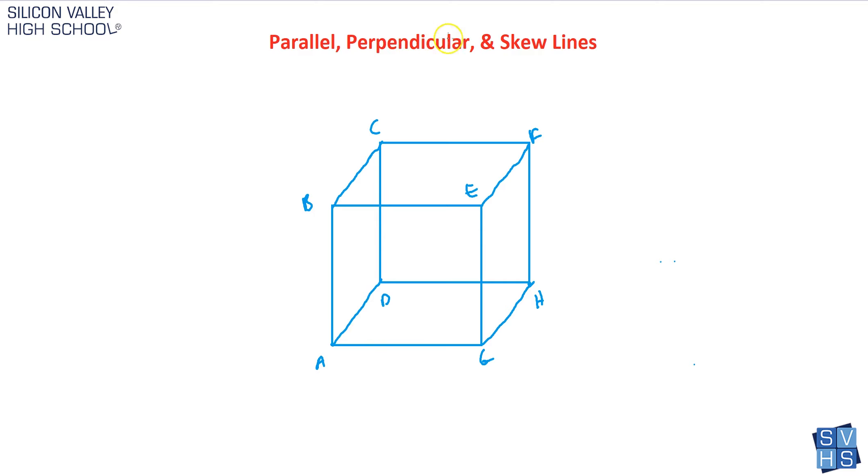Perpendicular lines have to be on the same plane, but they actually cross at exactly 90 degrees. And this cube, I didn't draw in the 90s, but this cube is, by definition, there's 90s on every angle here.